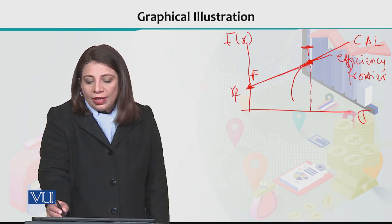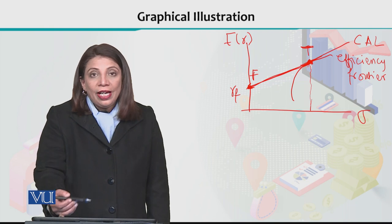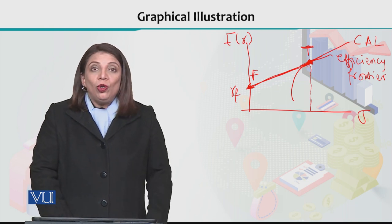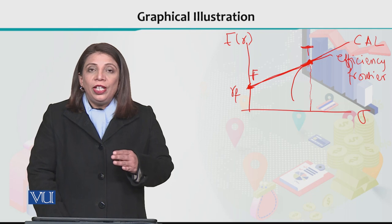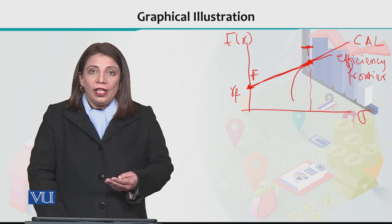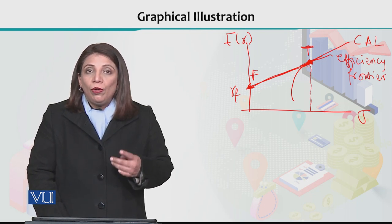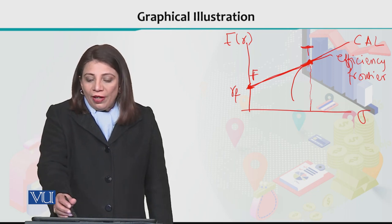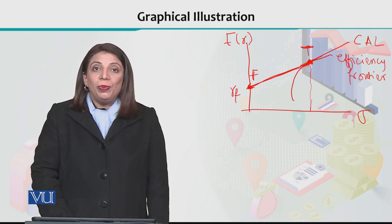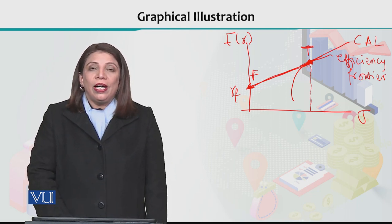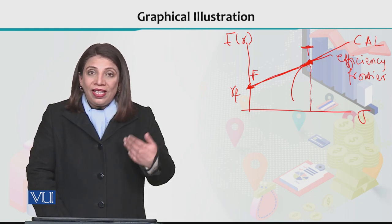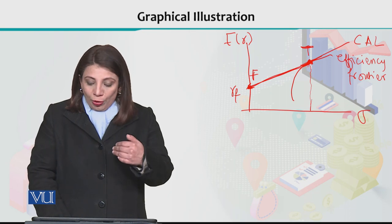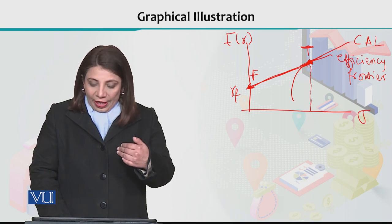All those points on the line between F and T are the recommended portfolios. Now, among these, which portfolio does a particular investor prefer? All portfolios lying on the line from point F to point T are preferred portfolios. But how do we select which one of these to choose?